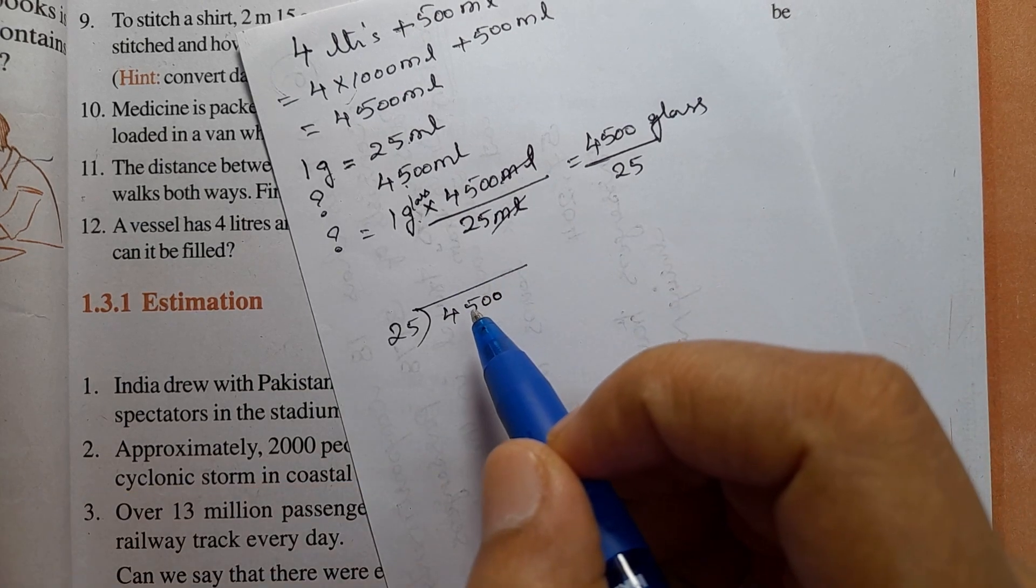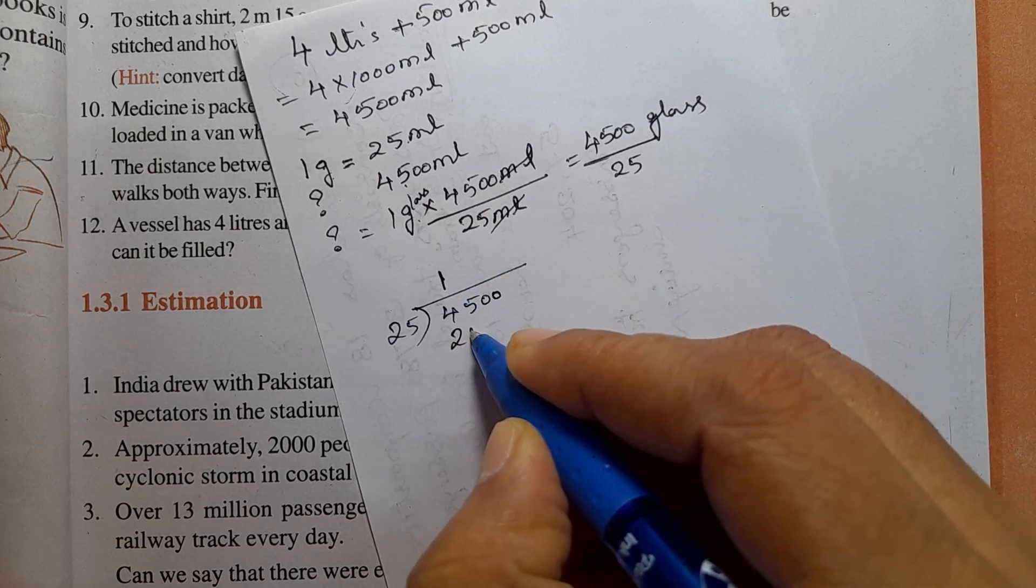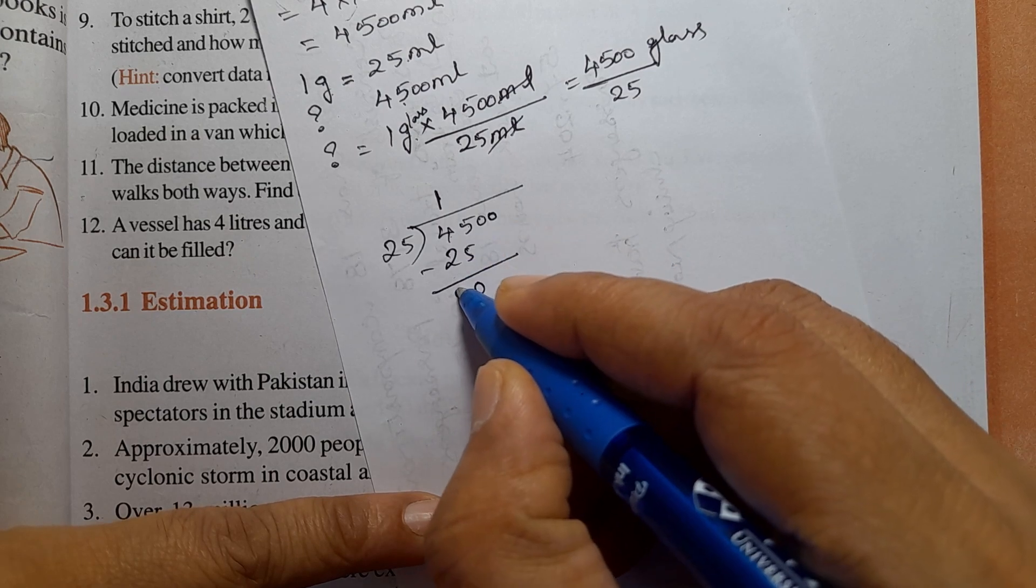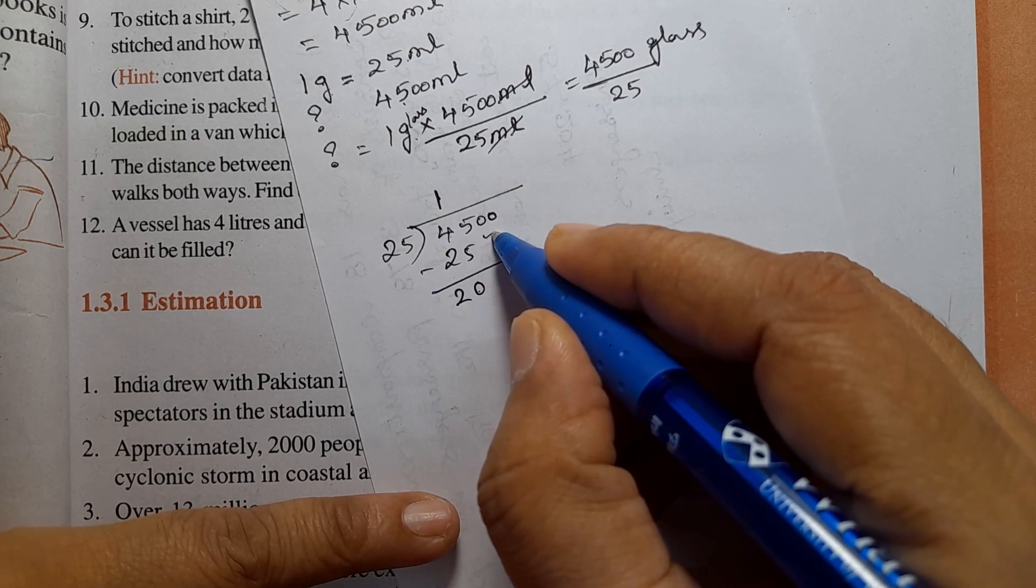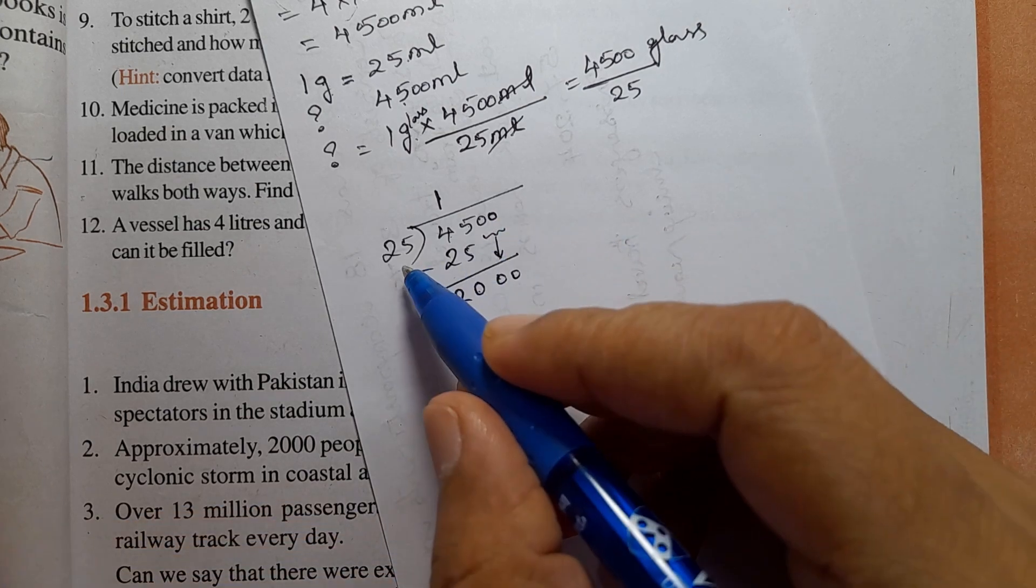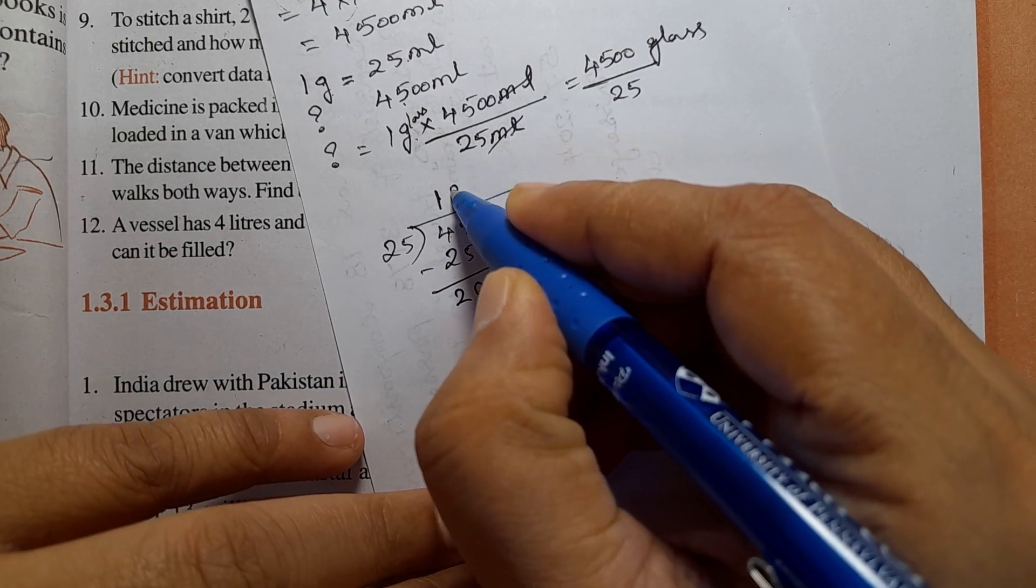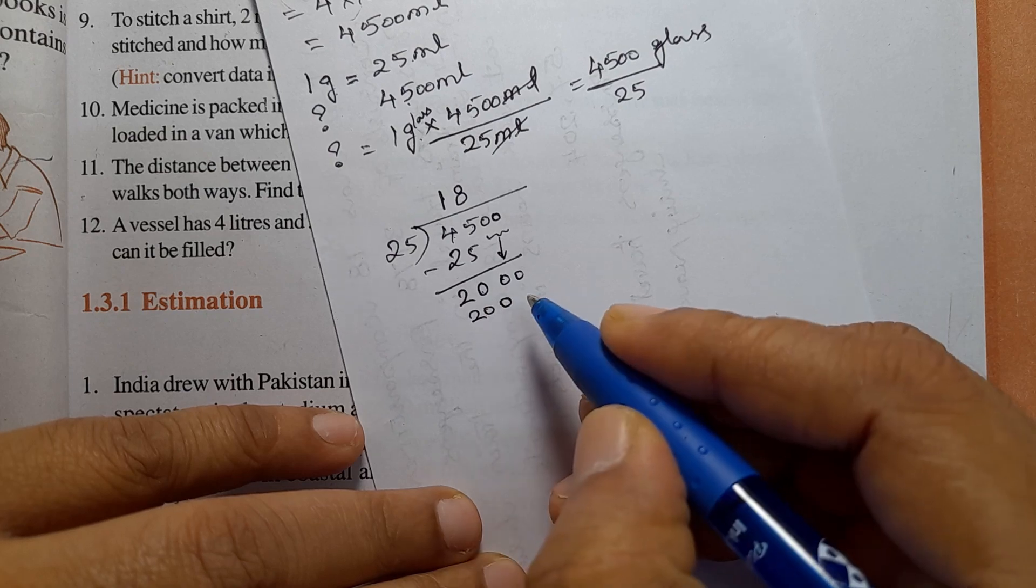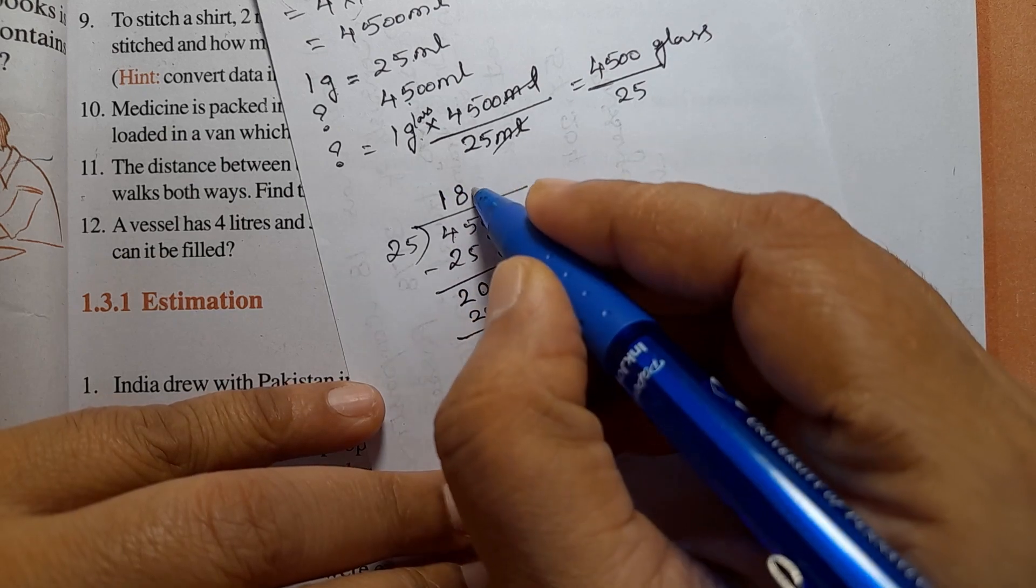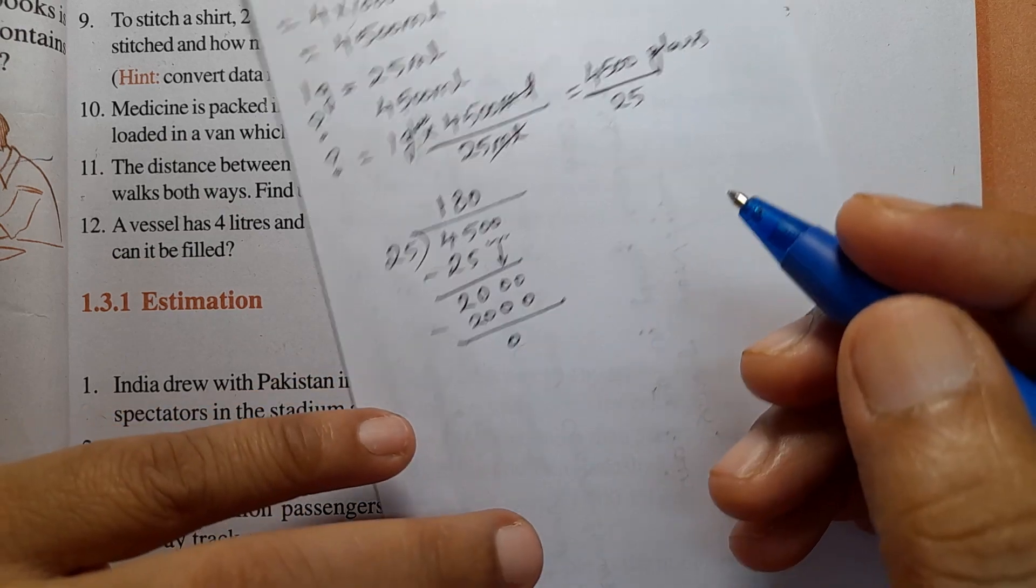So 25 into 45 hundred. 25 times 1 is 25, subtract to get 20. Bring down zero to get 200. 25 times 8 is 200, subtract to get zero. Bring down zero. 25 times 0 is 0. So the answer is 180, remainder 0.